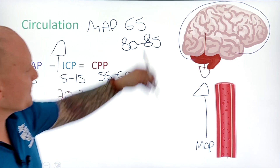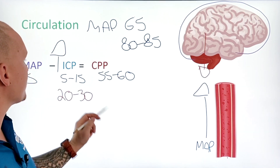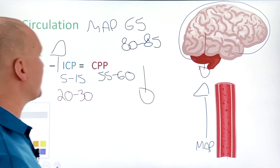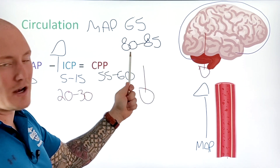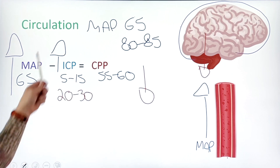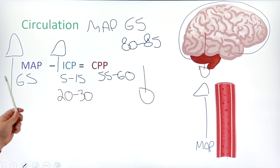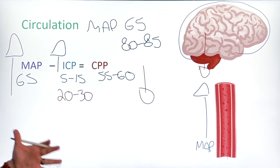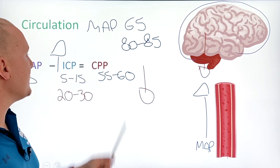If we have ICP going up — that pressure pushing back on the mean arterial pressure trying to push forward to the brain — then our cerebral perfusion pressure is going to go down. In order to compensate for that, our body says we need more pressure going forward, we're not getting enough perfusion in the brain. So it tries to increase our mean arterial pressure to compensate. That's why we try and maintain a mean arterial pressure of 80 to 85 to compensate for this drastic increase in ICP that's ultimately driving CPP down.